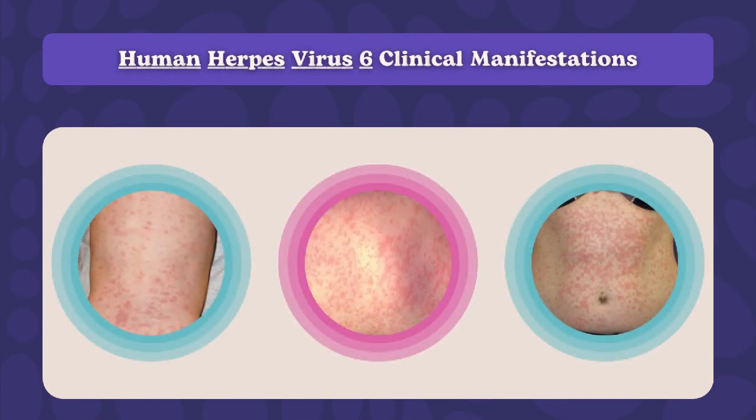Human herpesvirus 6 (HHV-6) is a double-stranded linear DNA virus with an icosahedral capsid, belonging to the herpesvirus family. It causes the common childhood disease roseola, also known as exanthema subitum or sixth disease, affecting children under 2 years of age — also called roseola infantum. The disease spreads through airborne respiratory droplets and can be transmitted by cuddling or kissing. Once inside the body, it replicates in peripheral blood mononuclear cells. Clinical manifestations include fever, fussiness, diarrhea, rash, and roseola syndrome.